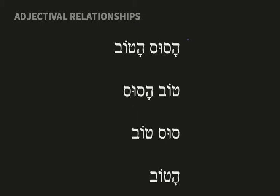Our first type of relationship is called an attributive relationship. An attributive relationship describes something right next to it — for example, 'the good time' or 'the happy boy.' Attributive adjectives always follow the noun, and most importantly, they agree in gender, number, and definiteness. In this example, ha-sus ha-tov — notice that they are agreeing in definiteness; they both have the article on them. So: the horse, the good, or 'the good horse.' Notice also how the adjective is following the noun.